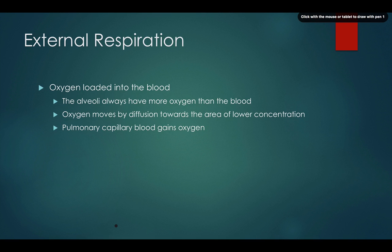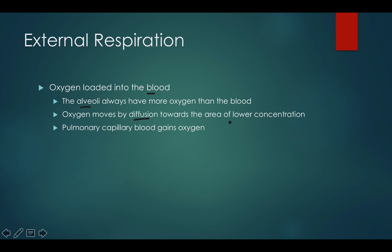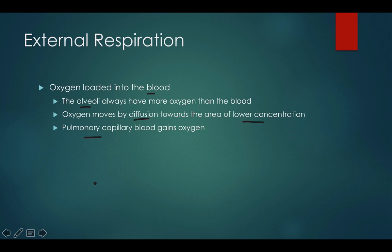External respiration is where oxygen is loaded into the blood at the alveoli. The alveoli always have more oxygen than the blood, so oxygen moves by diffusion toward the area of lower concentration — in this case, the blood. This occurs in the pulmonary capillaries, where the blood gains oxygen from the alveoli.